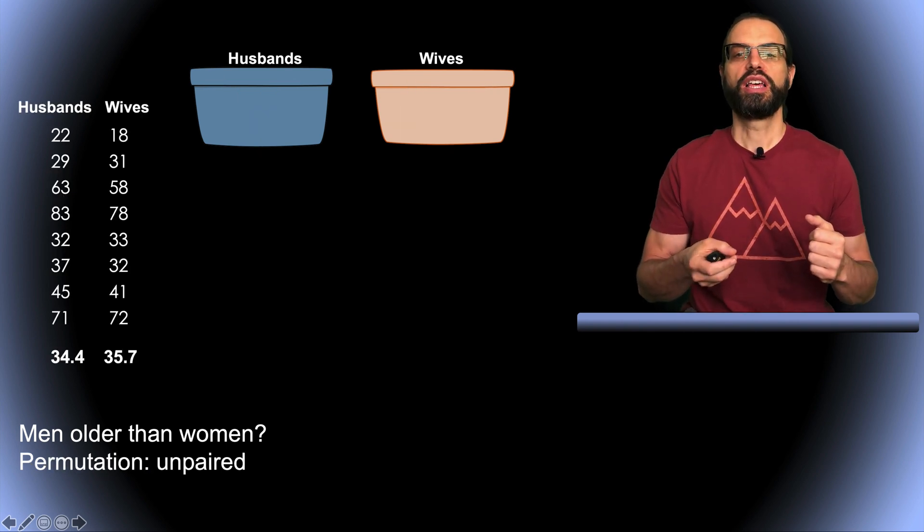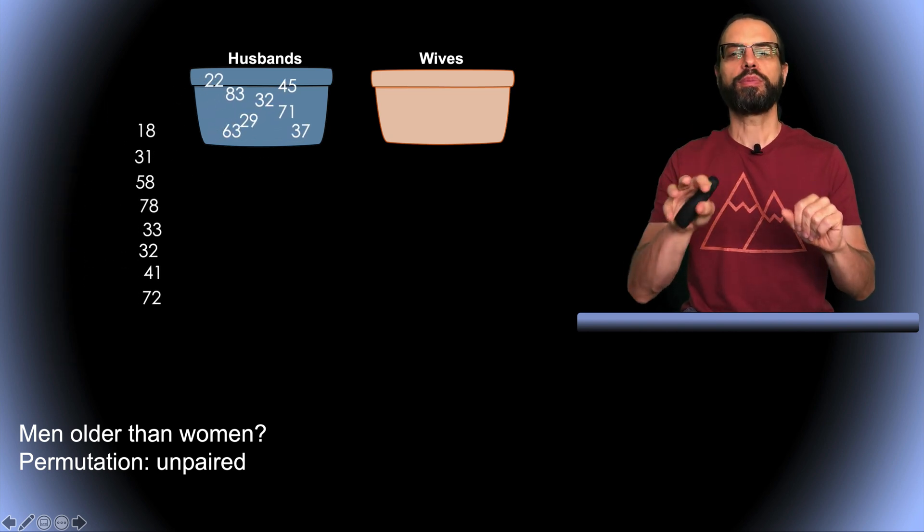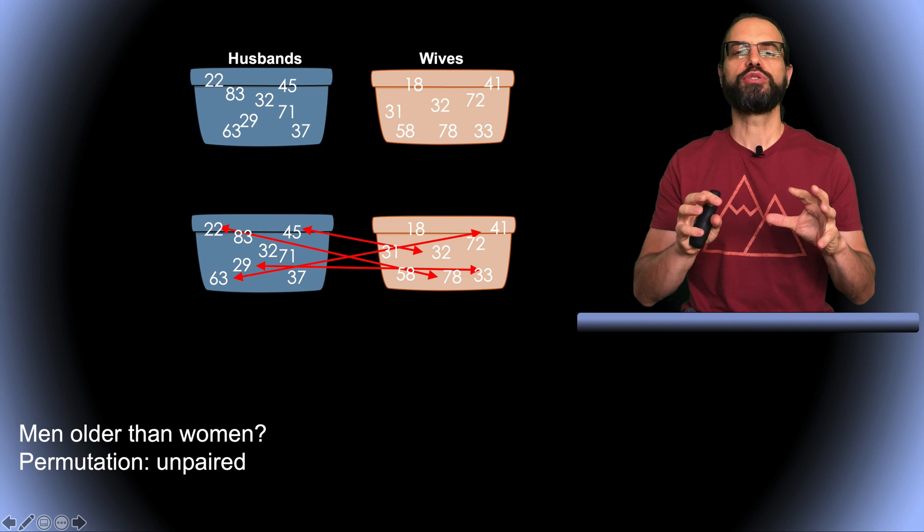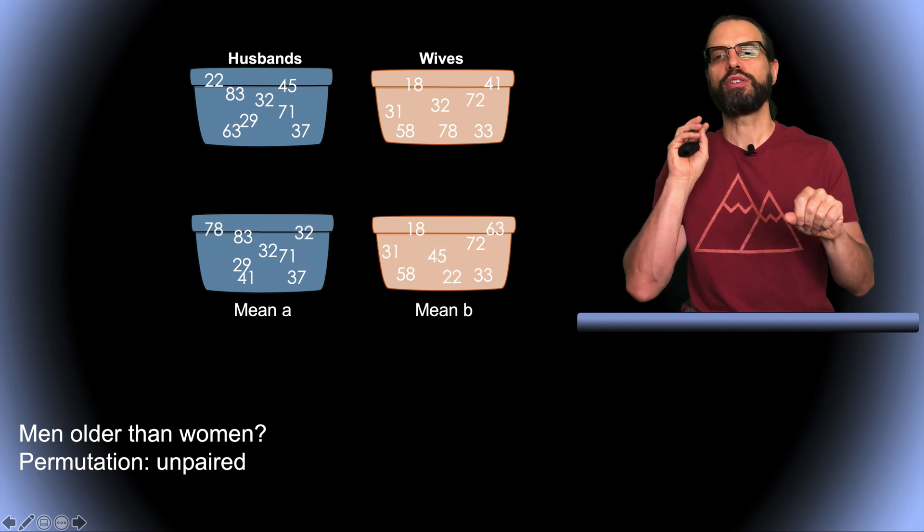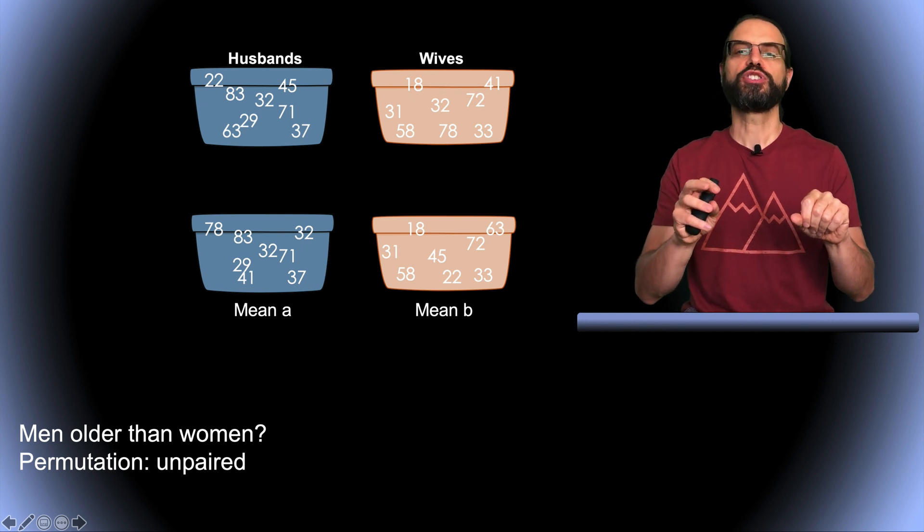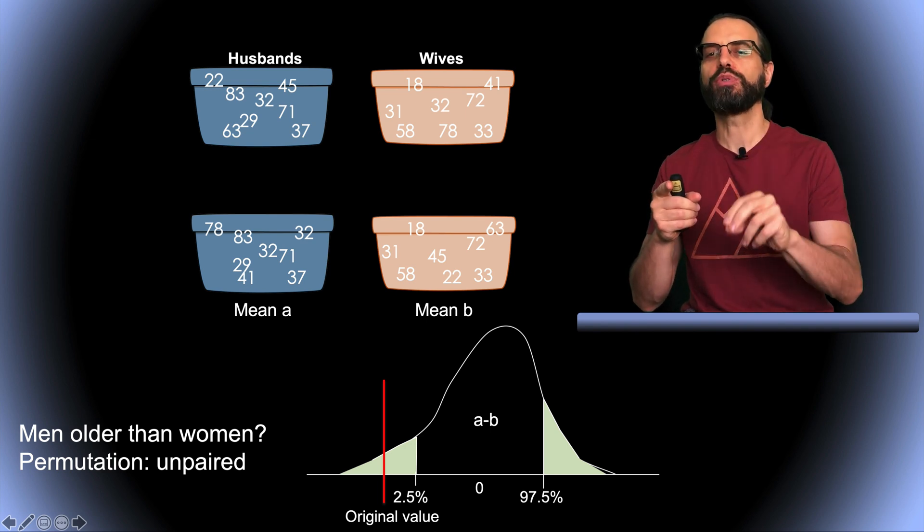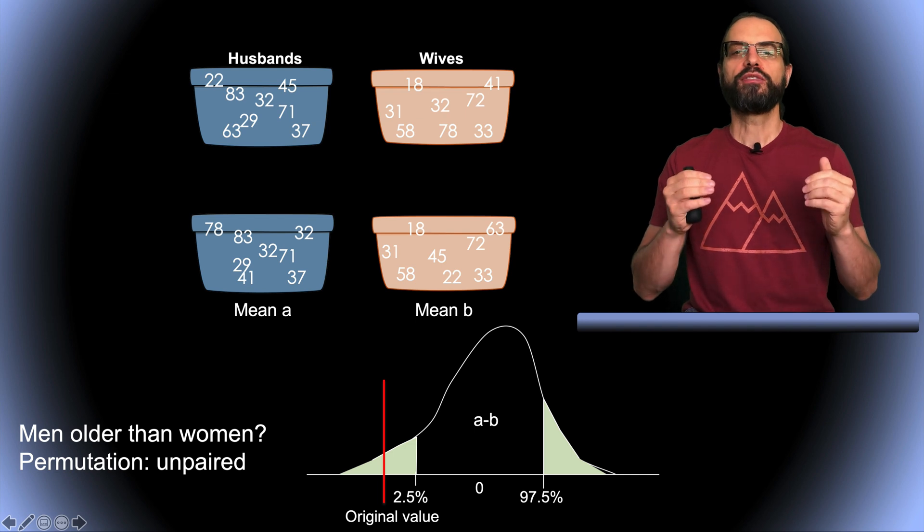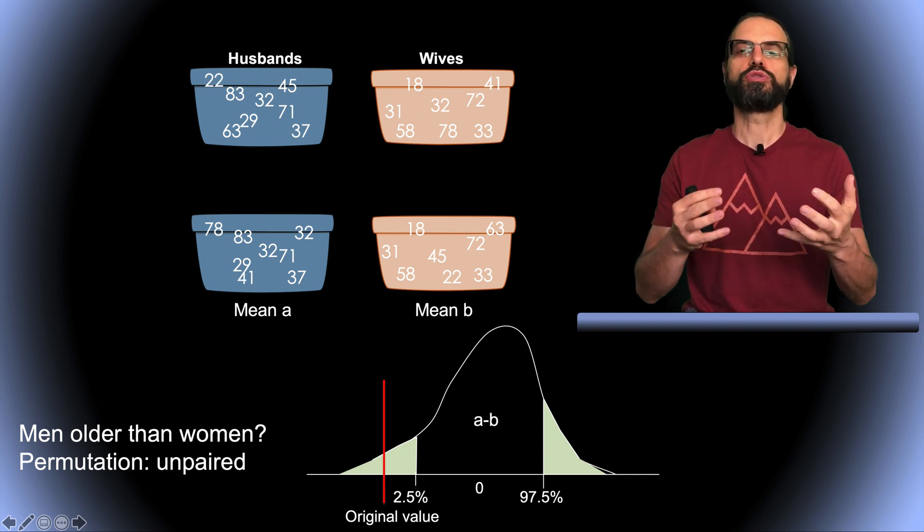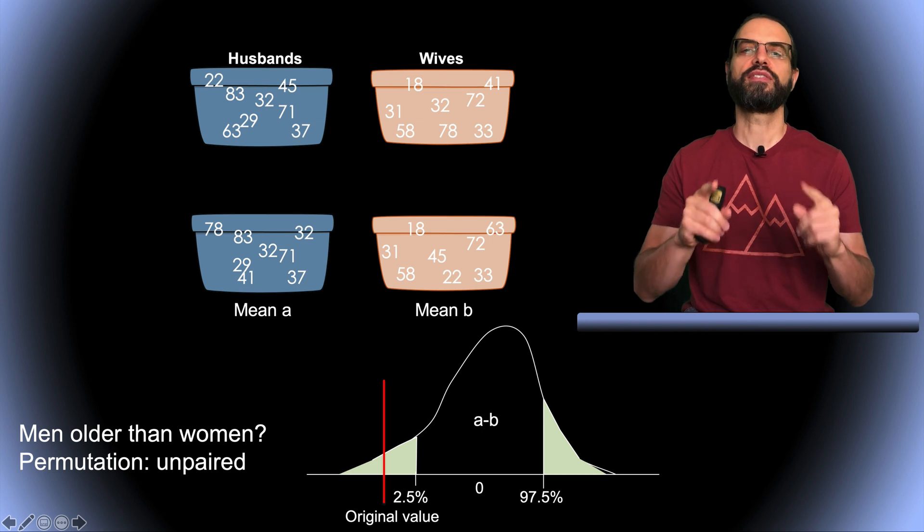What about permutation? For permutation, as for bootstrap, we have a bucket for men and a bucket for women. We randomly permute the values between these two buckets. So we take any value from the men bucket and swap it with a value in the women bucket. The difference with the paired case is that the age of any man can be permuted with the age of any woman, and we do not permute only within couple. We then take the mean from each bucket after permutation and build our null distribution. If the original unpermuted mean difference lies in the tail of the null distribution, we can conclude that there is a significant difference.